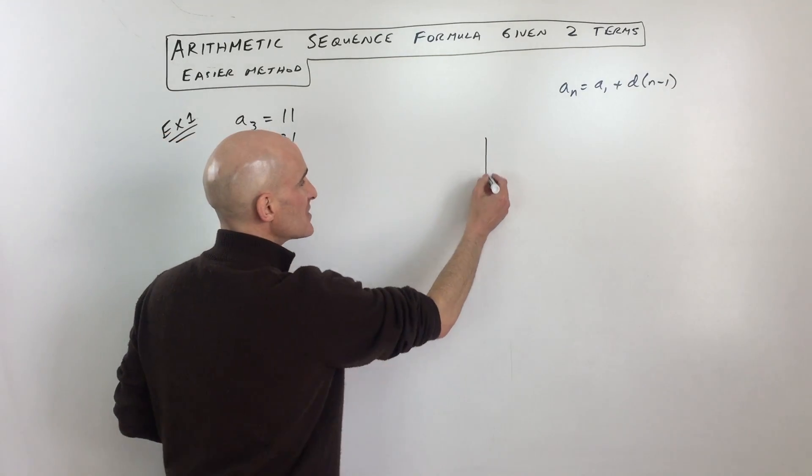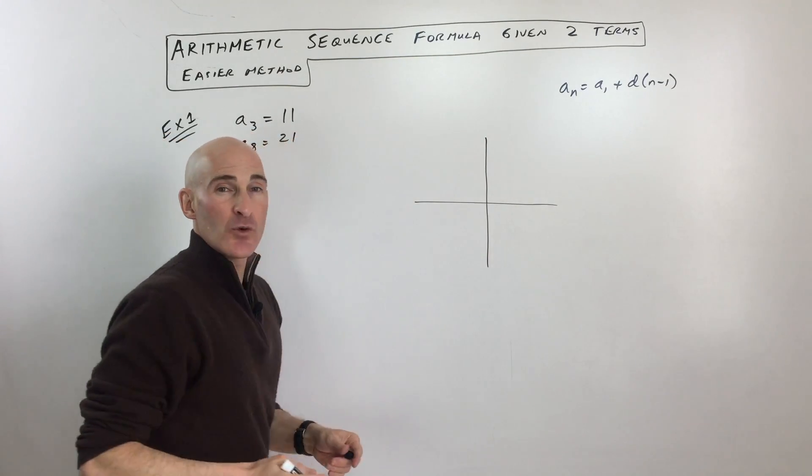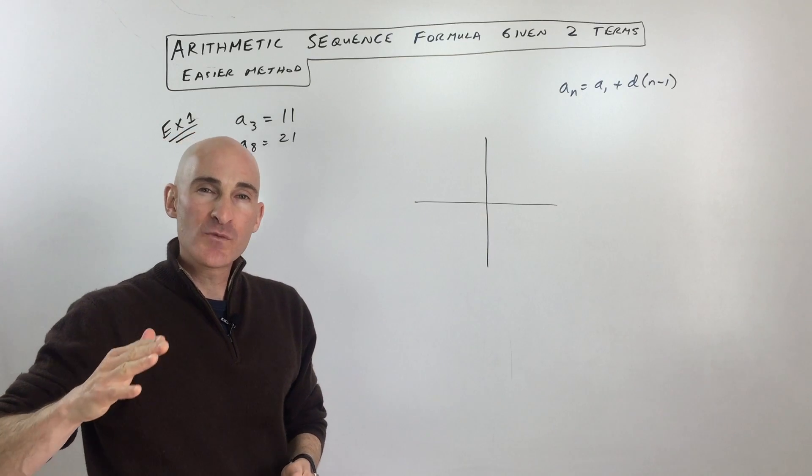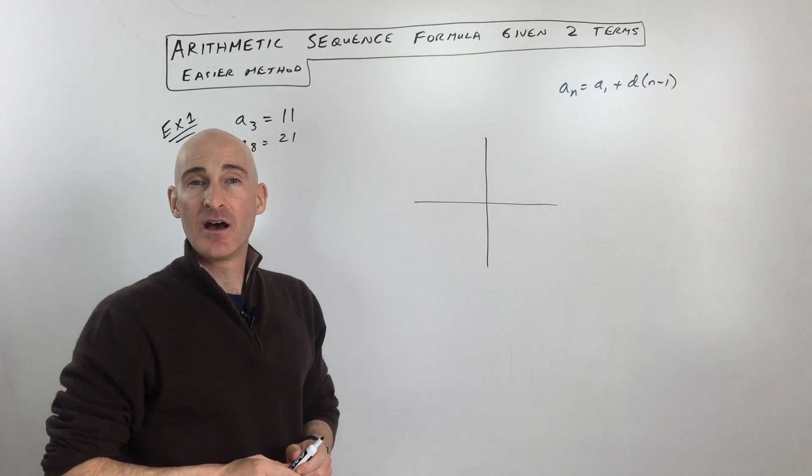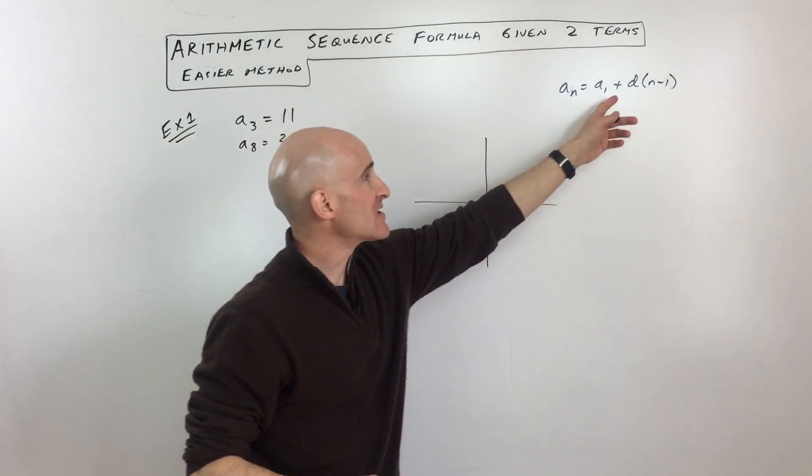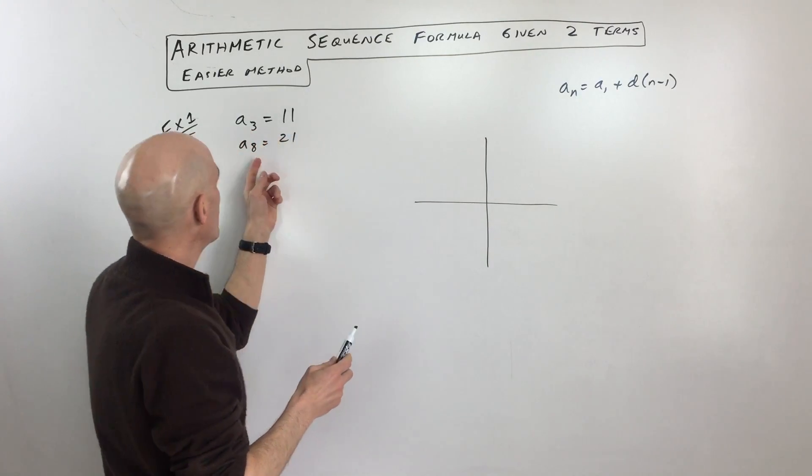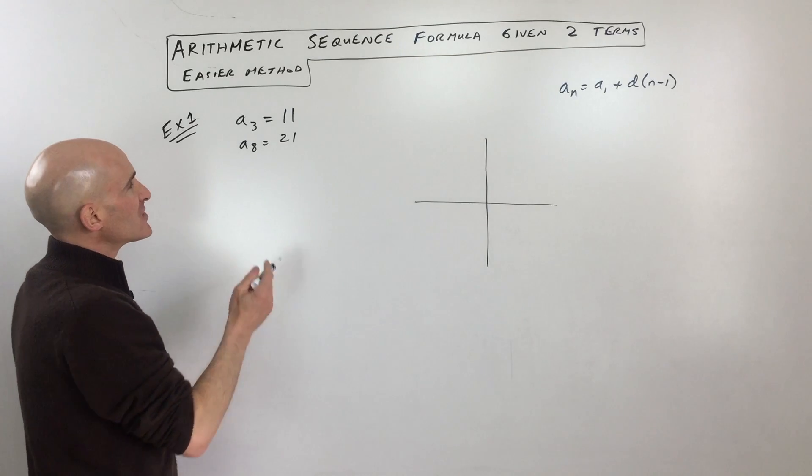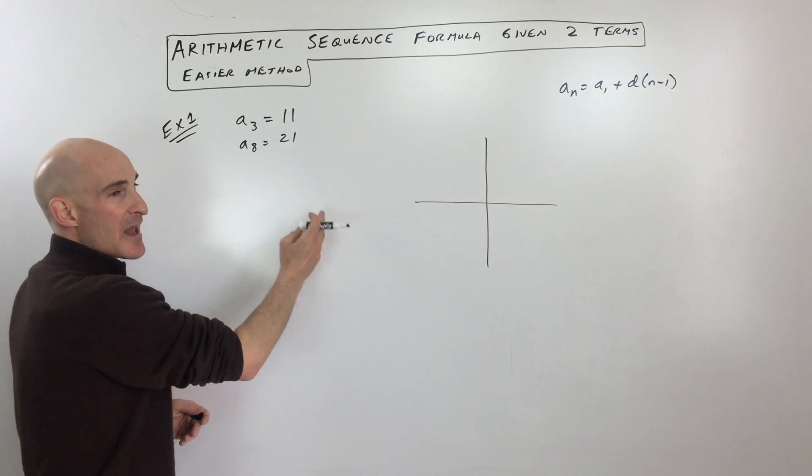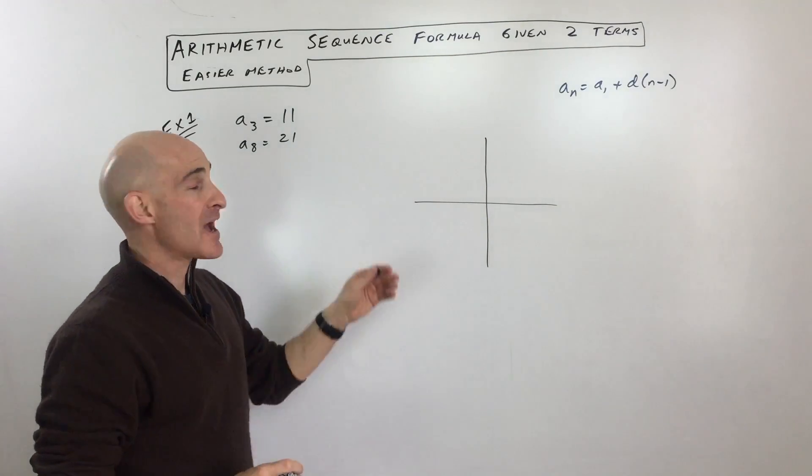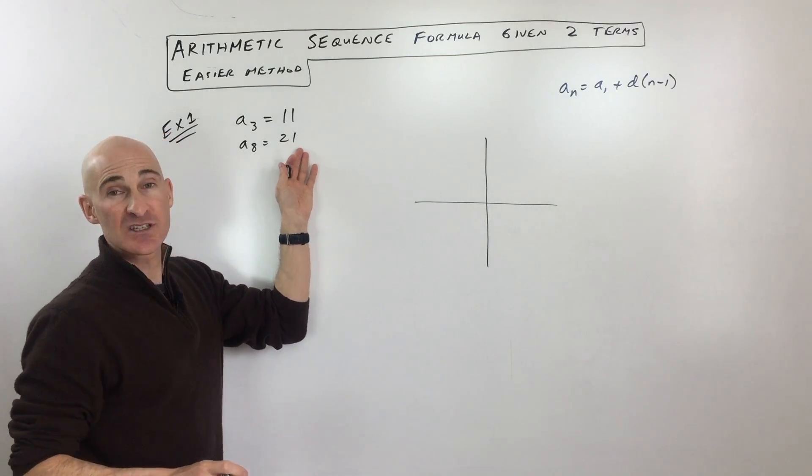When you're dealing with arithmetic sequences, you're dealing with terms that are going up by a constant amount, a constant difference as they call it, and that difference is actually the slope. For example, if we diagram this out, you can see that you're taking 11 and then adding the same quantity each time until you get to the next term, until you get to the eighth term which is 21.